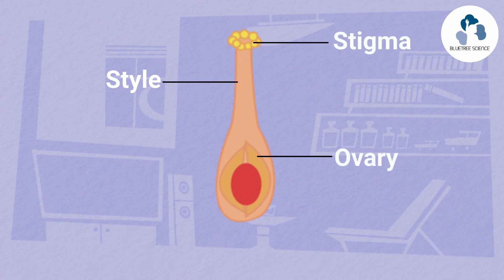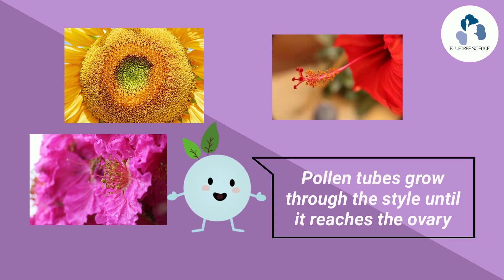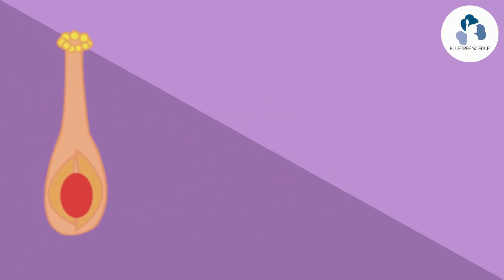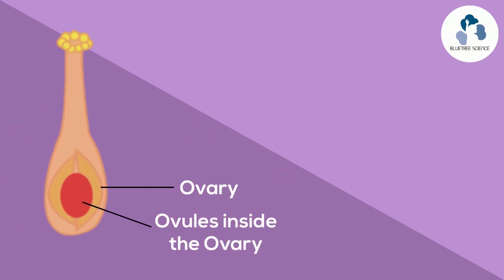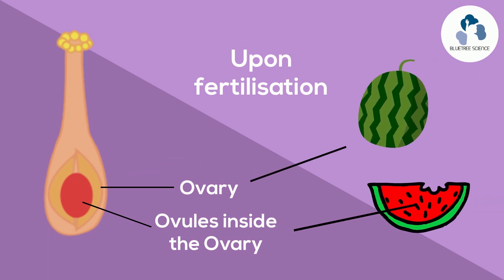The style supports the stigma and connects it to the ovary. One major function of the style is to assist with fertilization. When a pollen grain lands on the stigma of a flower, a pollen tube begins to grow through the style until it reaches an ovule inside the ovary. The ovary acts as a protective casing that houses the ovules, which contains the flower's female reproductive egg cells. Upon fertilization, the ovary will become a fruit, and the ovules will turn into the seeds in the fruit.